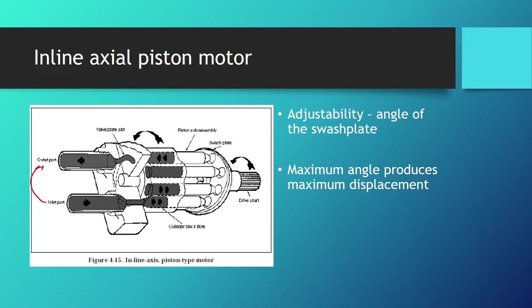The motor's displacement depends on the angle of the swash plate. At maximum angle displacement is at its highest because the pistons travel at maximum length. When the angle is reduced piston travel shortens, reducing the displacement.